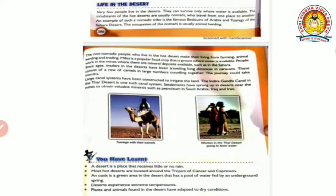The inhabitants of the hot deserts are usually nomads who travel from one place to another. It is difficult to live permanently there, so generally travelers move from place to place and make tents for some period of time. An example of such a nomadic tribe is the famous Bedouins of Arabia and Tuaregs of the Sahara desert. The occupation of the nomads is usually animal herding - they stay there for the animals like camels.